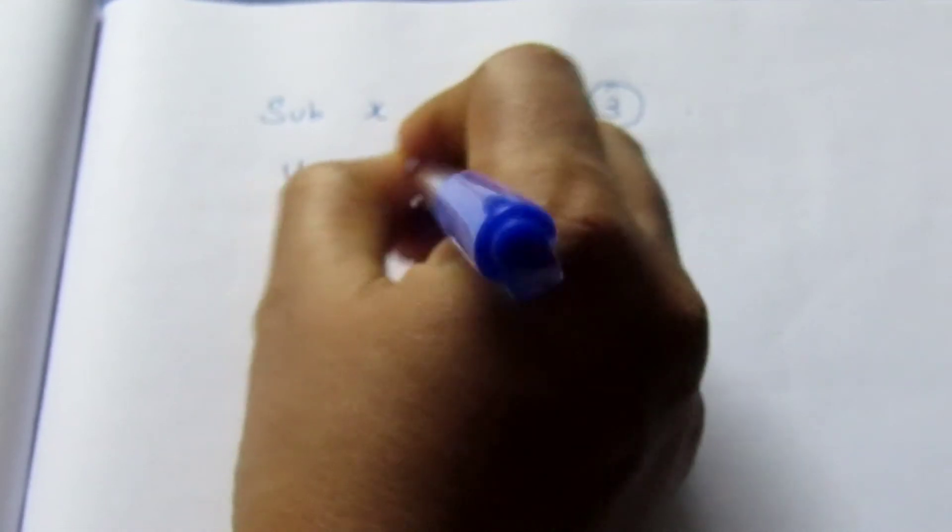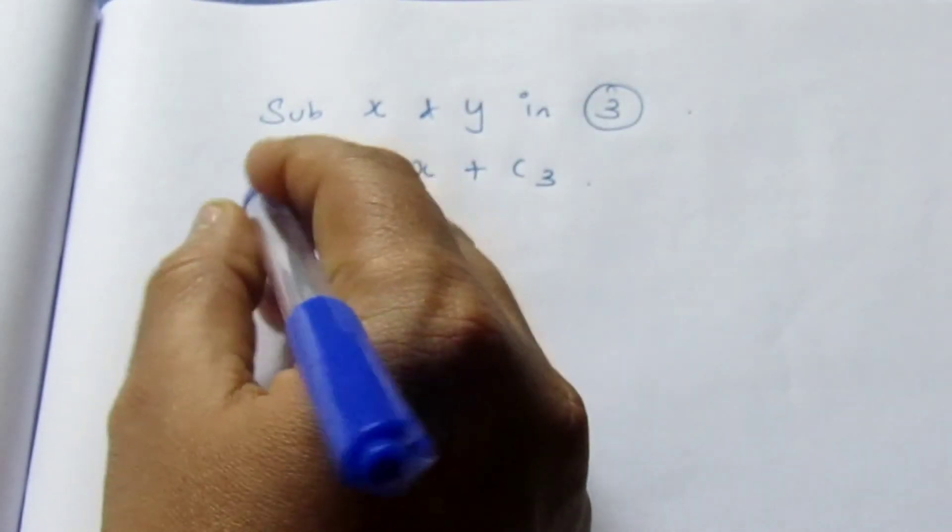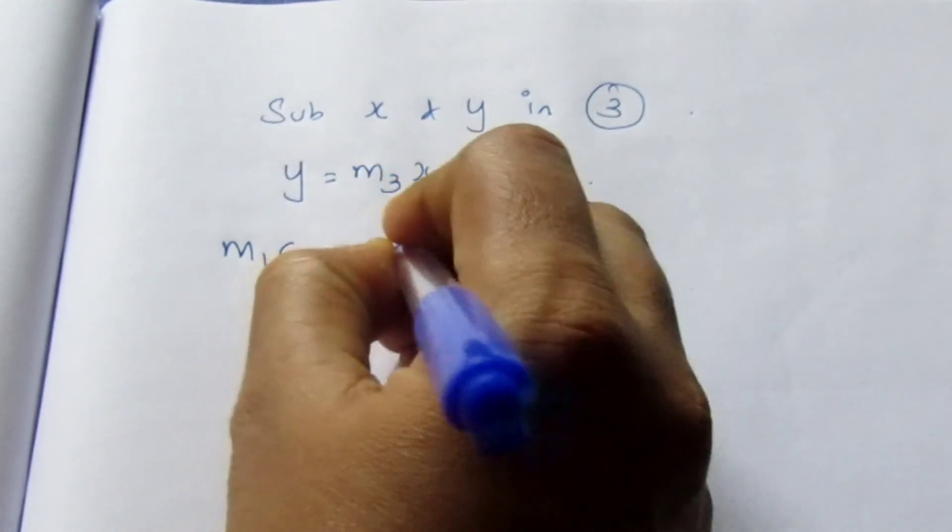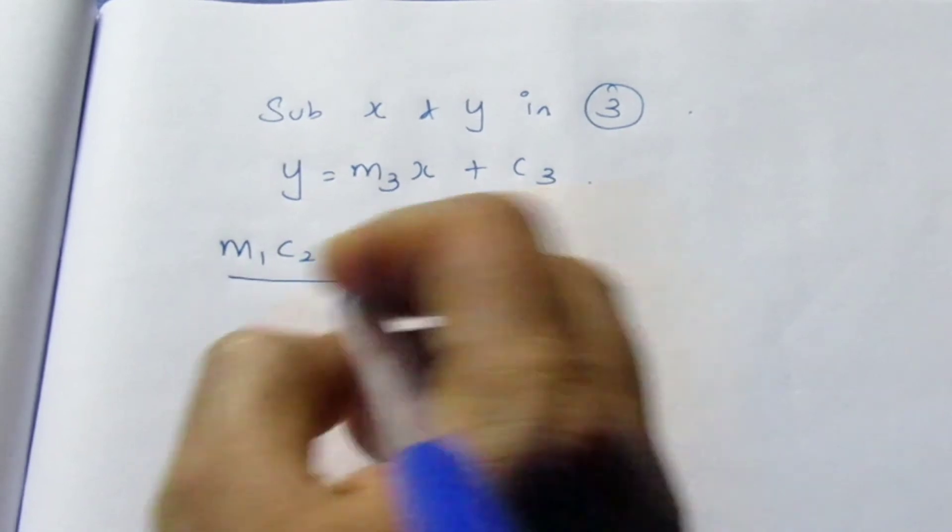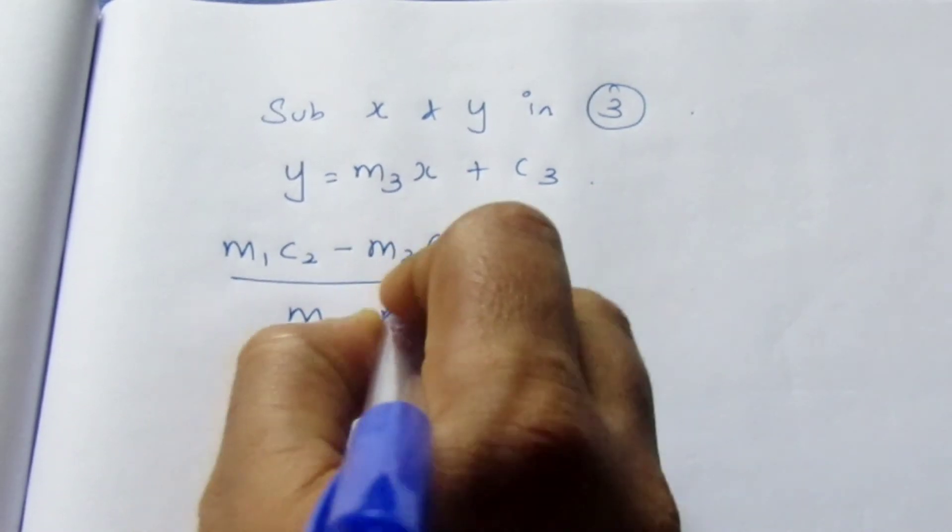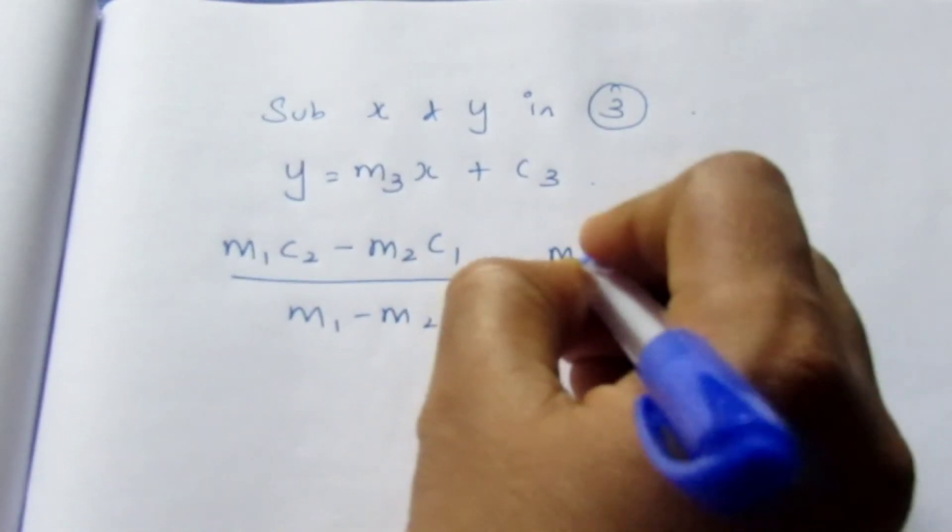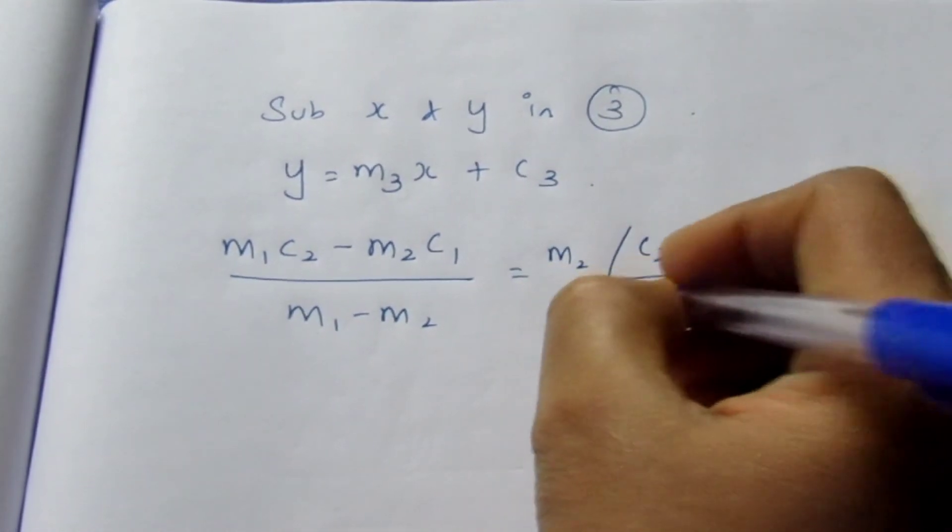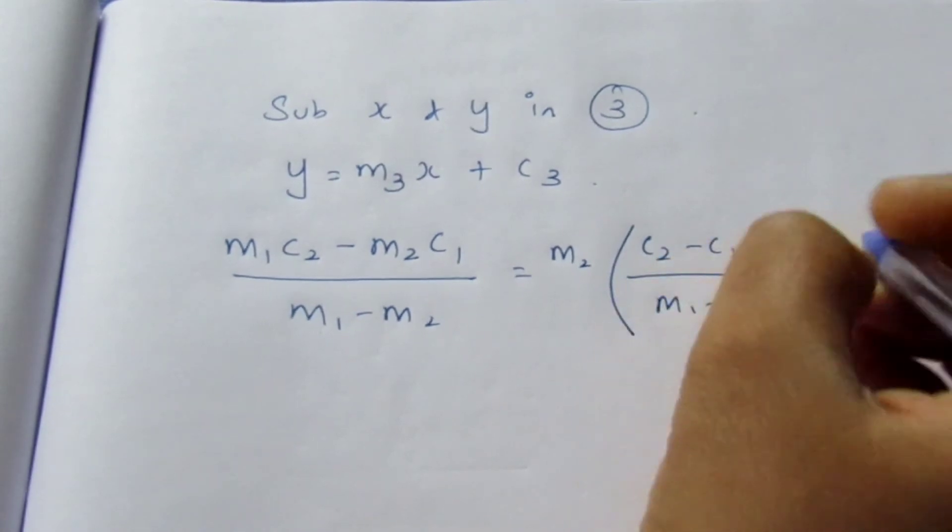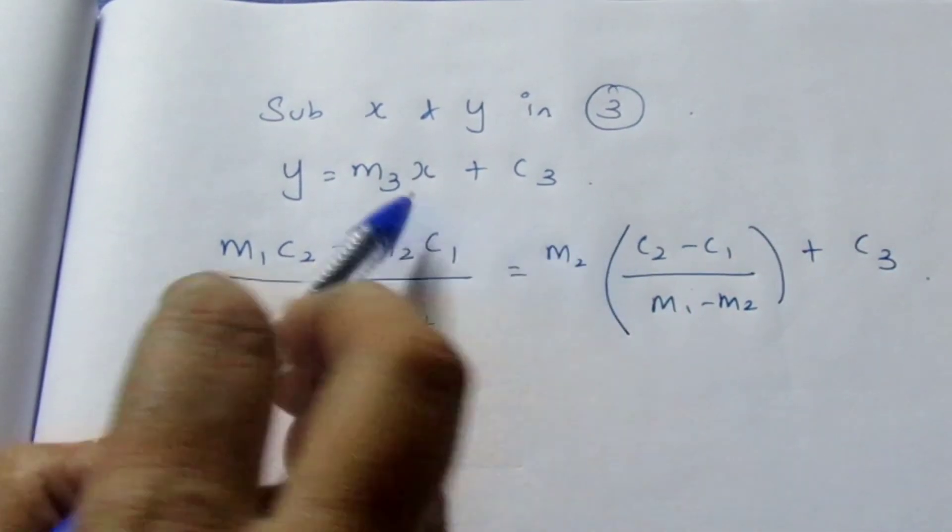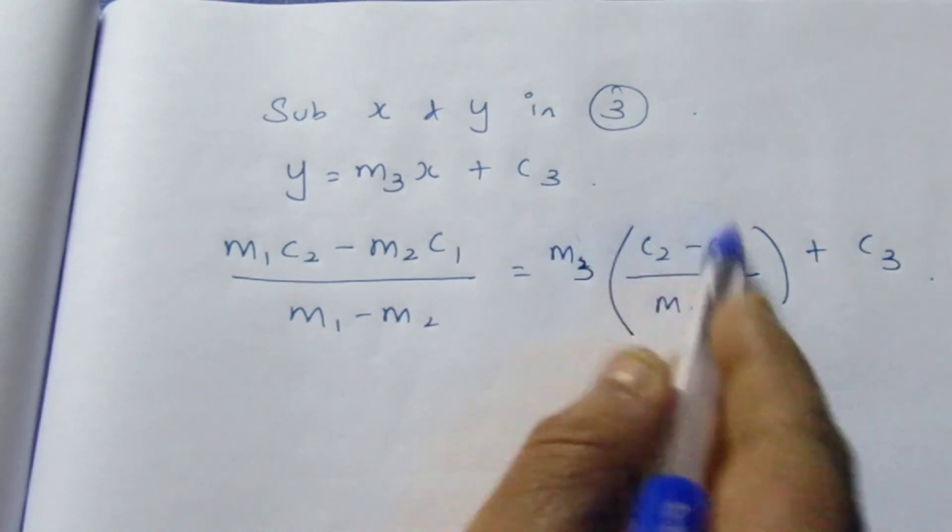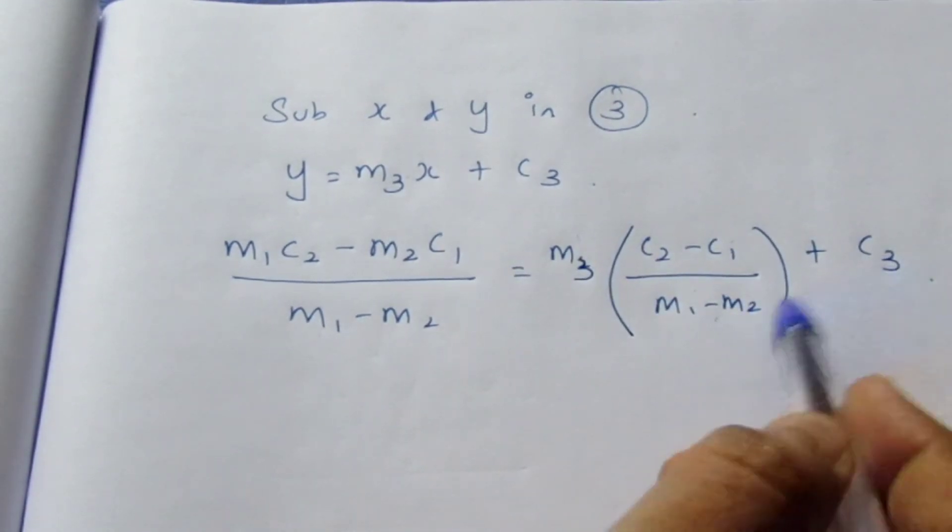The equation 3 is y = m₃x + c₃. Now we have y as (m₁c₂ - m₂c₁)/(m₁ - m₂) which is equal to m₃[(c₂ - c₁)/(m₁ - m₂)] + c₃. So instead of x, I am just substituting the value here. Here we need to multiply this inside and take LCM for c₃.